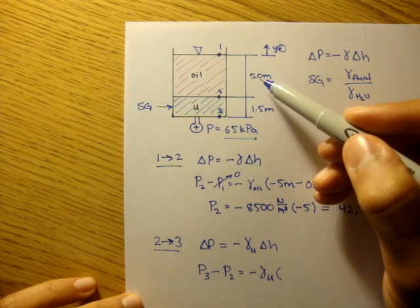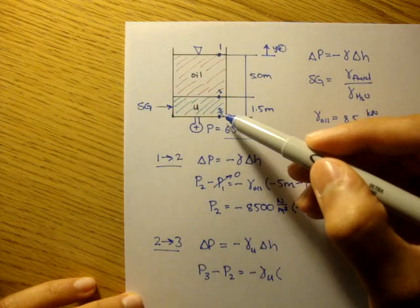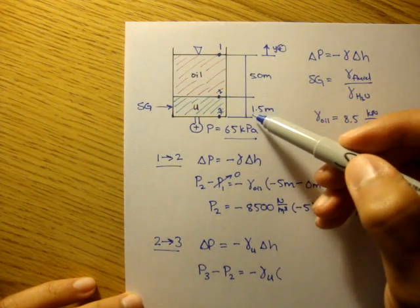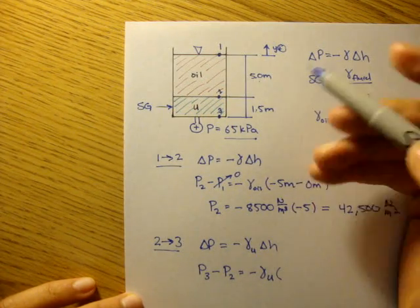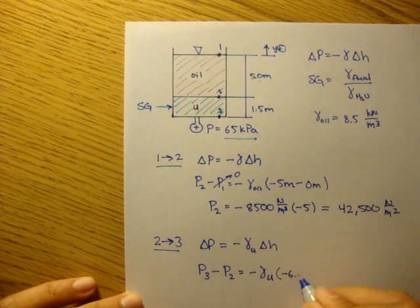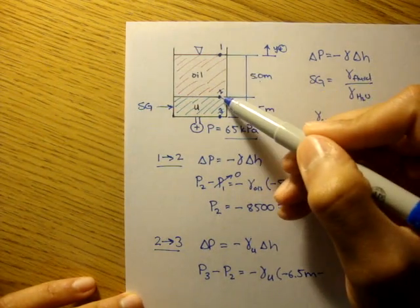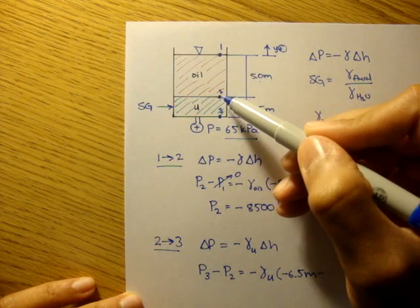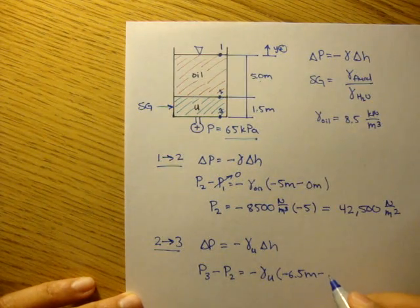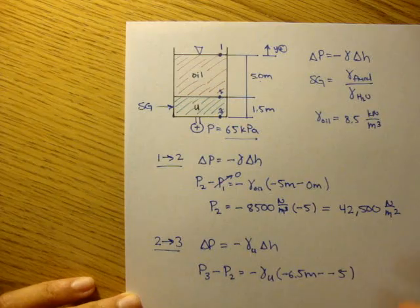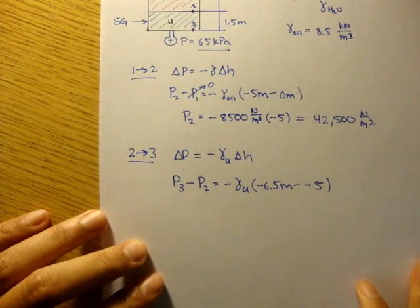Our final height is at the bottom of this tank, so it's at negative 6.5—five plus 1.5—negative 6.5 meters minus our initial height. Initially we're at two, so it'd be negative 5 minus negative 5.